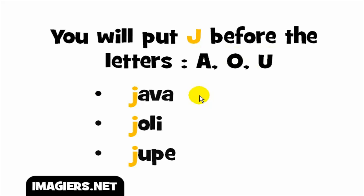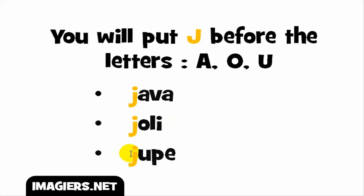I've chosen words that start with G, but it doesn't affect anything — it could be in the middle of a word, as long as it's before these vowels A, O, or U. So the first one: G-A gives you the sound 'Ja' — and the full word is 'Java'. Second: G-O gives 'Jo' — full word 'Jolie'. And G-U gives 'Ju' — full word 'Jupe'.